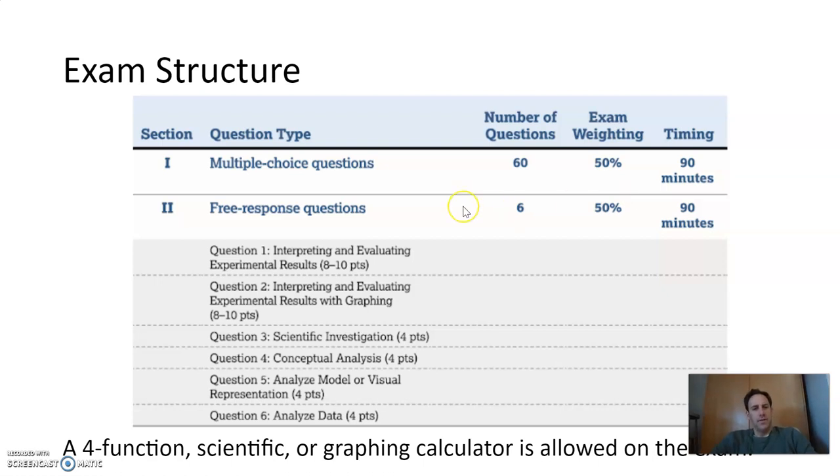First of all, the exam structure. As you know, there are both multiple choice and free response questions. There's going to be 60 multiple choice questions and six free response questions. Two of these are going to be what are considered long questions, which are about 10 points, and then four are going to be what they call short questions, which are worth four points. Each section, you get 90 minutes to do, and each section counts as 50% of your overall score. Note that time tends to be tight on this exam, so be prepared for that and be okay with it when it happens.